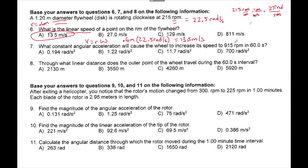Number seven: again converting, this comes to 95 rads per second. Angular acceleration alpha equals change in omega divided by t, which is omega final minus omega initial over t. So 95 minus 22.5 divided by 60 seconds gives 1.22 rads per second squared.